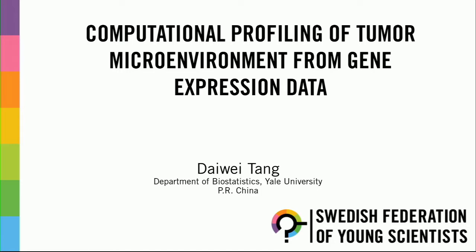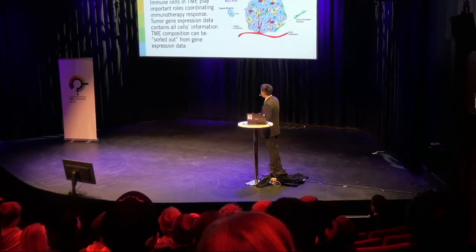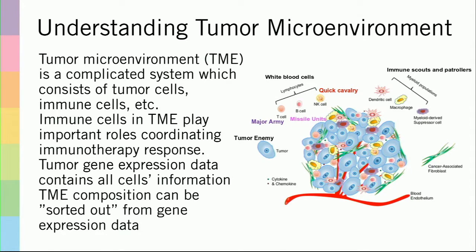Let's get started with what is tumor microenvironment. When people talk about tumor, they always think that's one thing — tumor is a specific kind of cells and they are bad. But actually, it's not. Tumor is a quite complicated system. If you look at the graph here, you will see tumor actually is a little ecosystem, consisting of different types of cells.